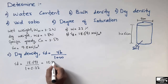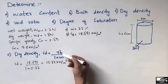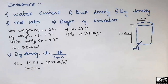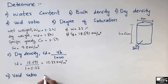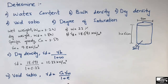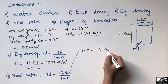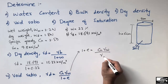The dry density comes out to be 15.32 kilonewton per cubic meter. Now the fourth one is the void ratio. We find the void ratio using another form of the dry density formula: gamma d equals G times gamma w divided by (1 + e). Rearranging, (1 + e) equals G times gamma w divided by gamma d.